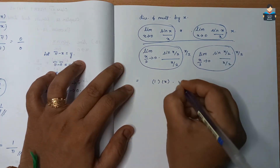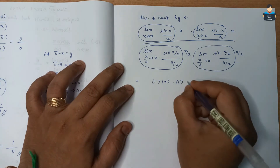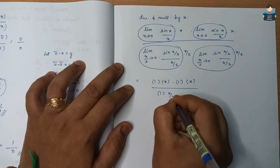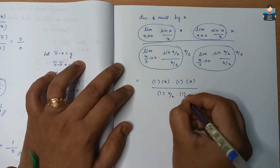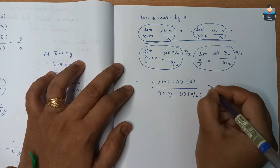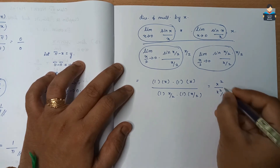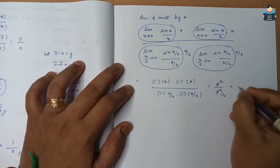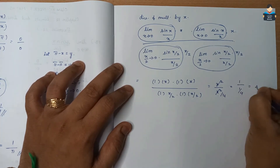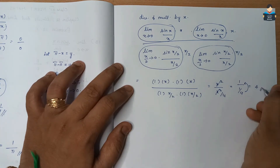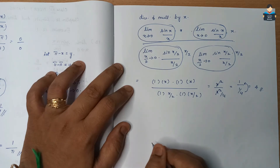After applying the identity, each sin/argument part becomes 1. So we get x × 1 divided by (x/2) × 1, which simplifies to x divided by x/2, giving x²/(x²/4). Cancelling x² gives 1/(1/4) = 4. The answer for Question 17 is 4.